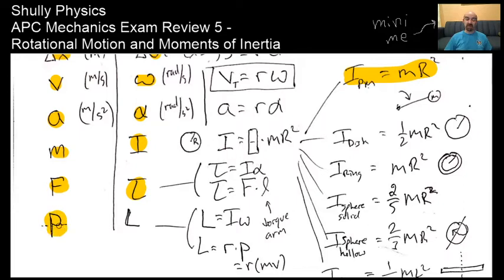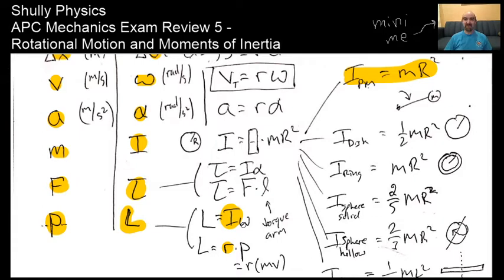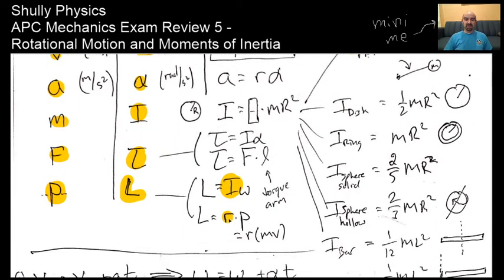Instead of linear momentum P, there's angular momentum L. The units for angular momentum are kilograms meters squared per second—you can think of it as the units for I times omega: kilograms meters squared times radians over seconds, but you wouldn't put the radians in there. So kilograms meters squared per second is the best unit for angular momentum.